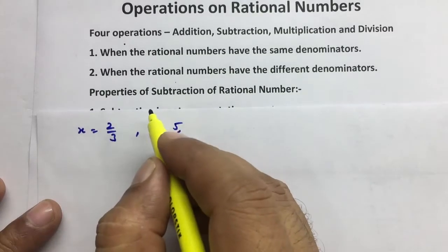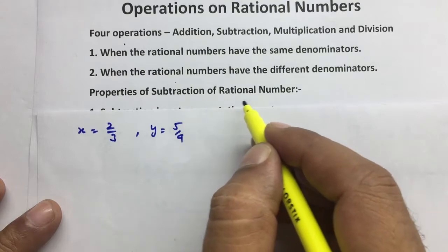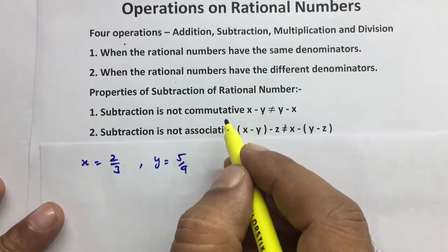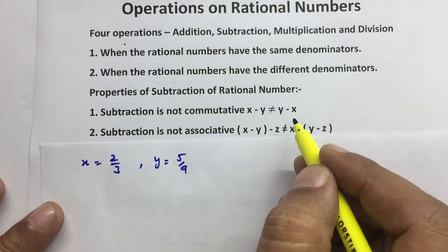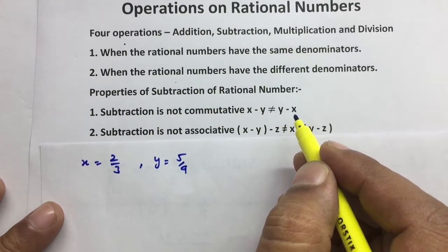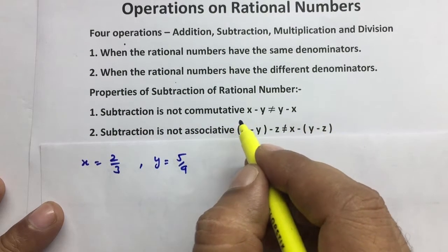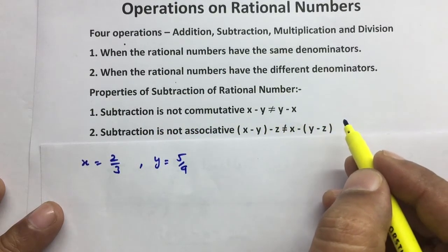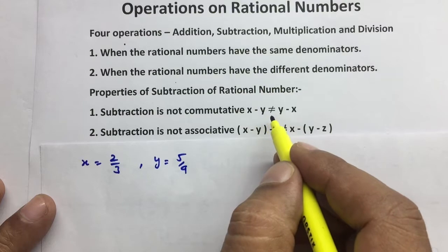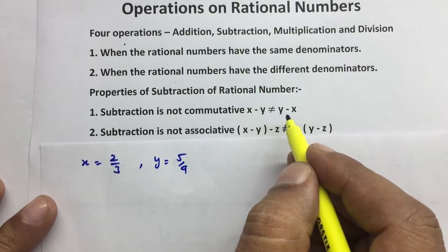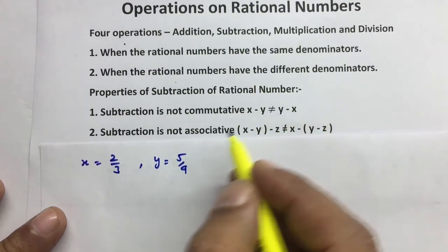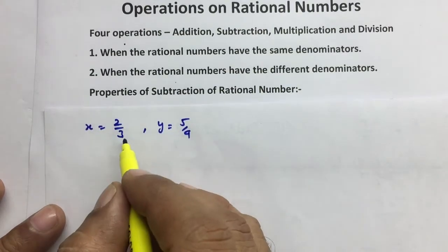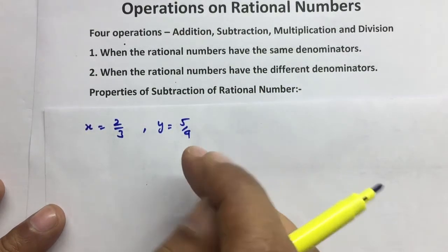Next are the properties of subtraction of rational numbers. There are two properties. First is commutative — subtraction is not commutative. Isse pehle wali video mein aap ne dekha ki addition commutative hain, lekin subtraction commutative nahi hain. Yaani ki x minus y is not equal to y minus x. Is example se verify karte hain: x ki value two by three, y ki value five upon nine.